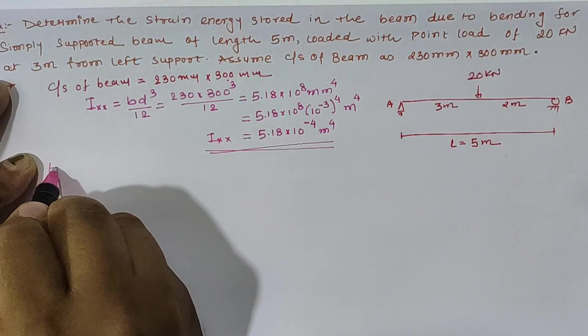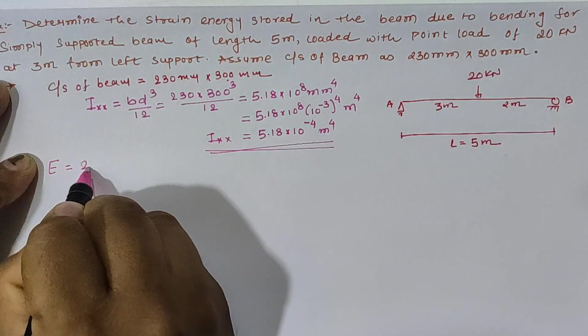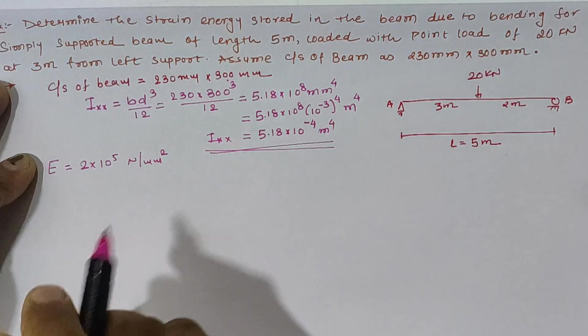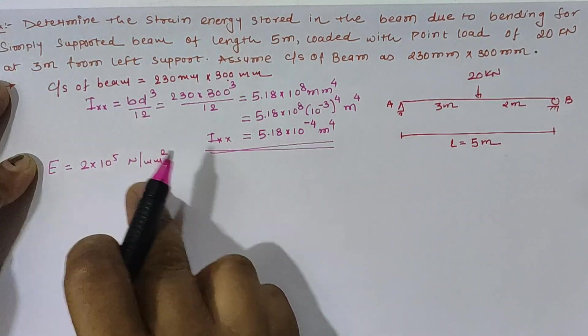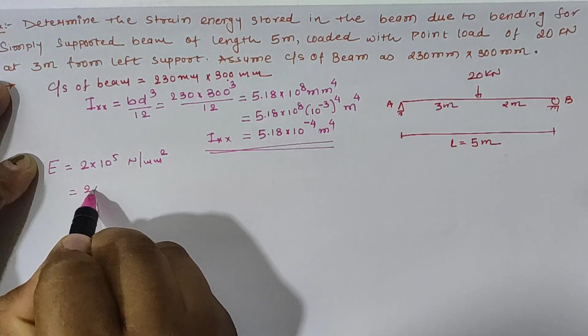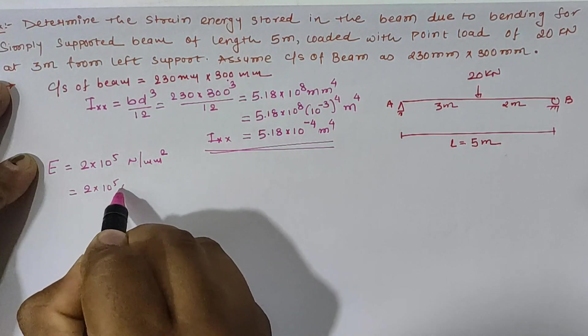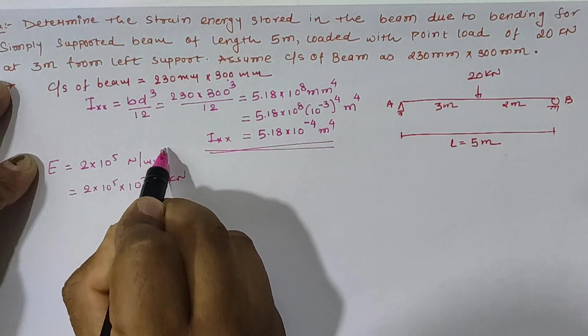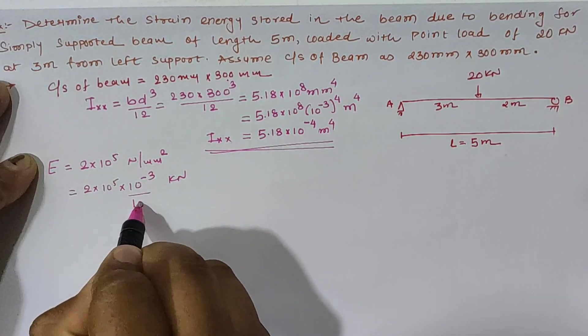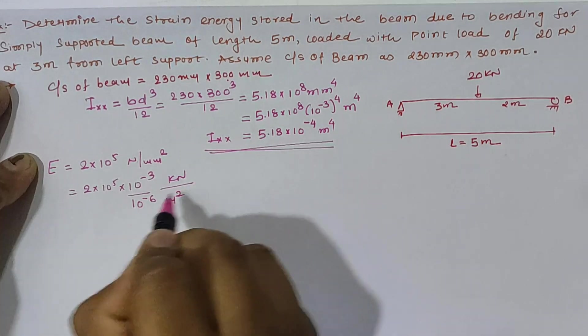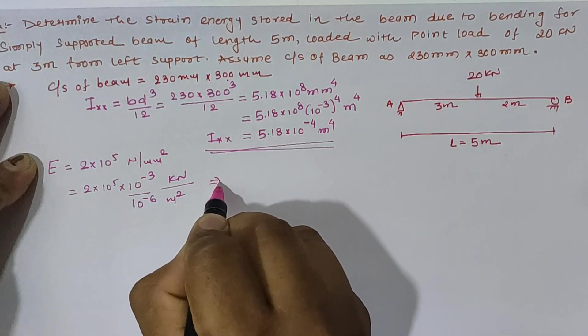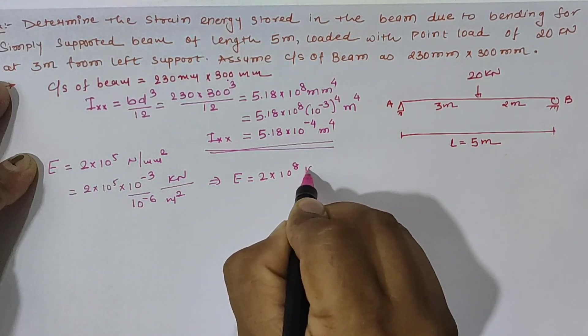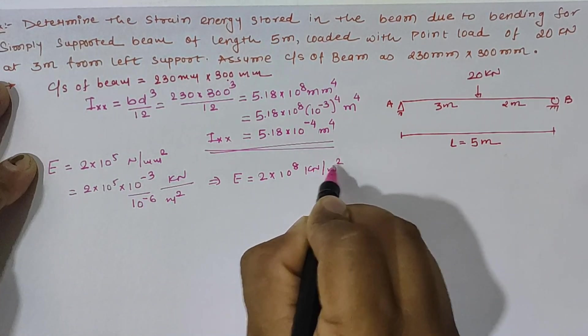Similarly, if we assume modulus of elasticity as 2 x 10⁵ N per mm² and we have to convert it into kN per meter². Hence, for 1 N it is 10⁻³ kN and for 1 mm² it is 10⁻⁶ meter². Hence, modulus of elasticity value is 2 x 10⁸ kN per meter².